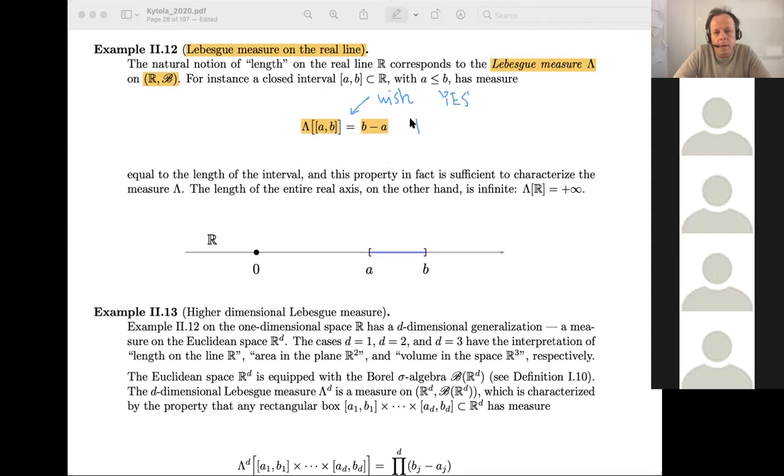So there exists one, and actually luckily, and only one, such measure on the set, the real numbers, and the sigma algebra being the Borel sigma algebra.